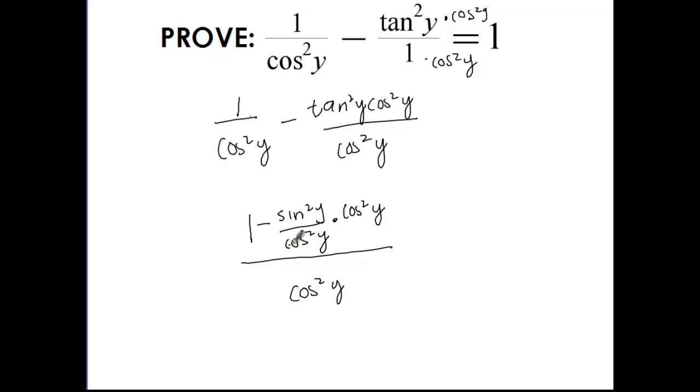At this point, I see that my cosine squareds are going to cancel out. So I'm left with 1 minus sine squared y over cosine squared y.